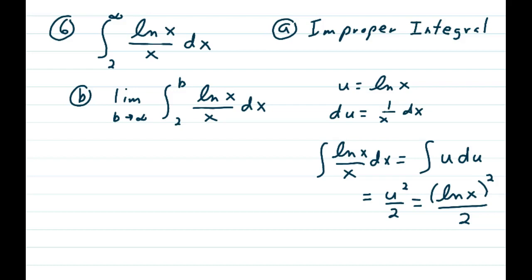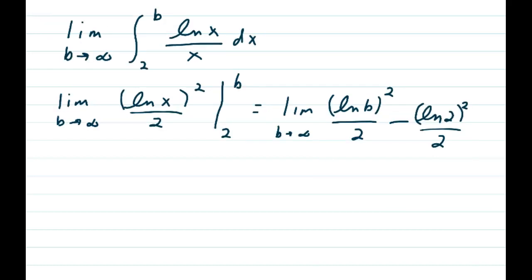Now we have to apply the limits of integration and the limit. So we have the limit as b approaches infinity of the natural log of x squared over 2. We plug in our b and our 2 to get the limit as b approaches infinity of the natural log of b squared over 2 minus the natural log of 2 squared over 2, and now we have to let b approach infinity and determine if this converges or diverges.